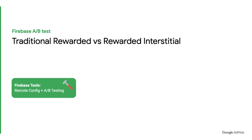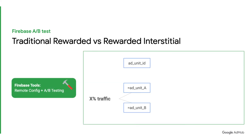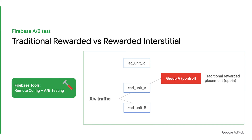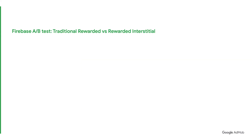Your Firebase A-B test experiment will look like this. Group A serves as the control group and will only see your app's existing traditional rewarded placement. On the other hand, Group B will only see the rewarded interstitial placement. Now, let's deep dive into the details of setting up this A-B test.